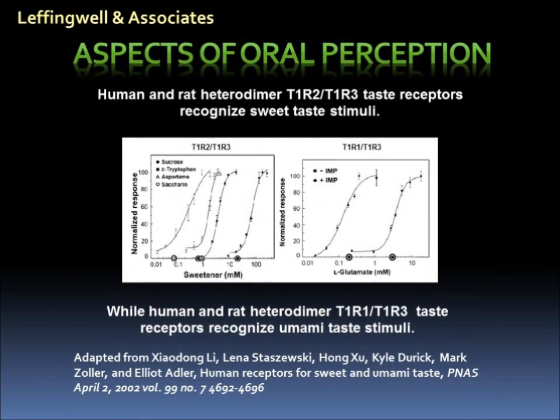In 2002, scientists at Senomyx, as part of their sweet taste and savory taste enhancer programs, identified the receptors involved in both sweet taste and umami taste. In the case of both sweet stimuli and umami stimuli, two heterodimer taste receptors are involved. In the case of sweet, the T1R2 and T1R3 dimer receptor, and in the case of umami, the T1R1 and T1R3 dimer receptor.